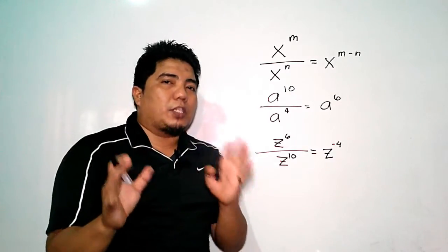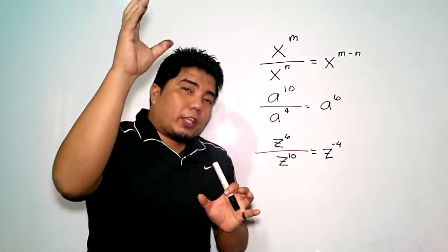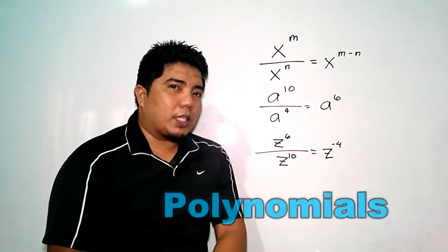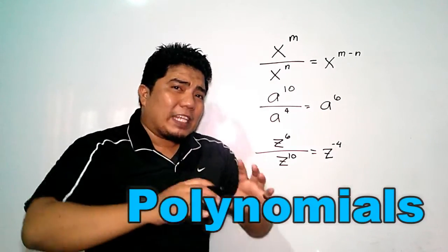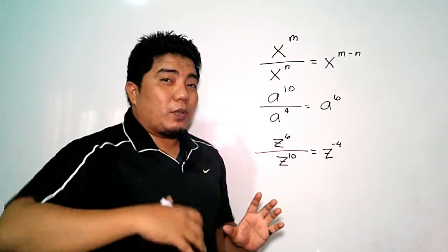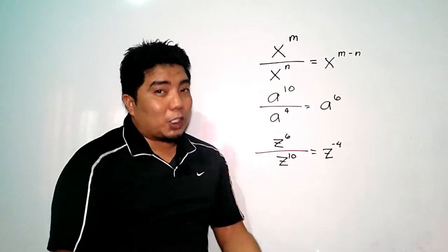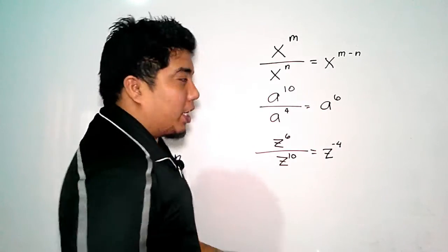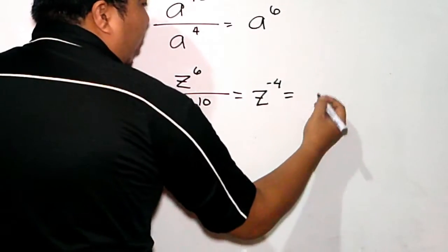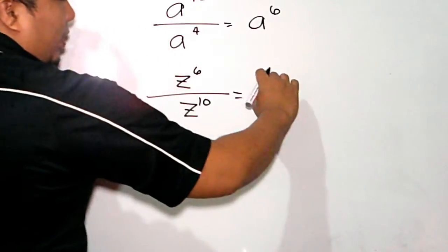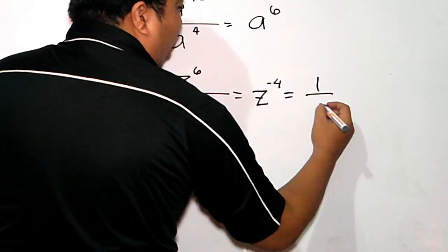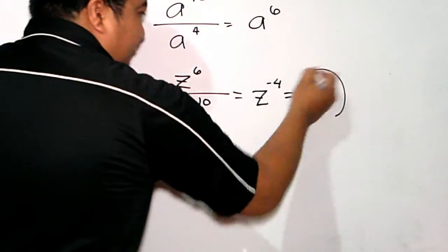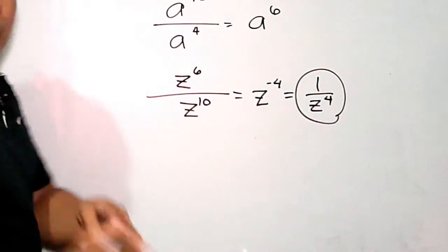However, in rational algebraic expressions, remember that the numerator and the denominator must both be polynomials. Having a negative exponent gives you an expression that is not a rational algebraic expression. Therefore, you need to convert it — you put that term into the denominator side, giving you 1 over z to the 4th.